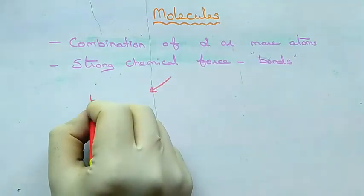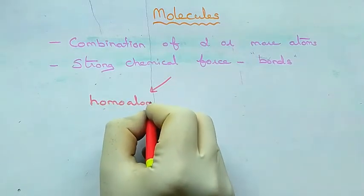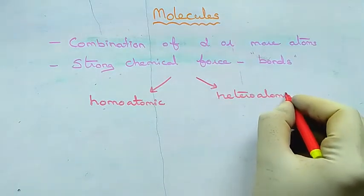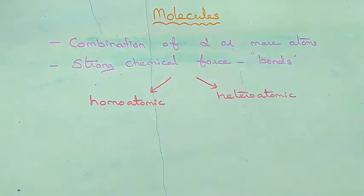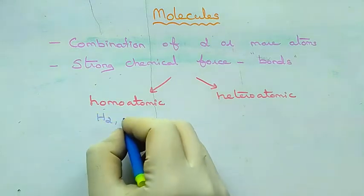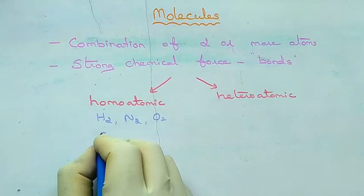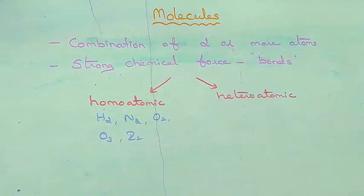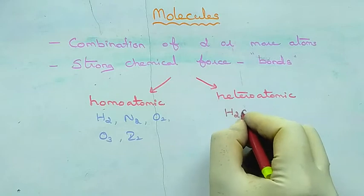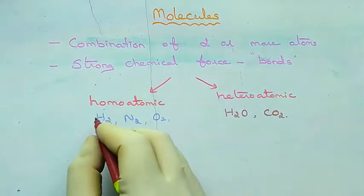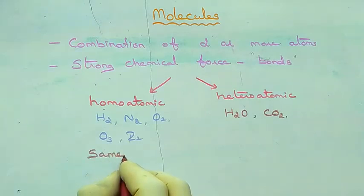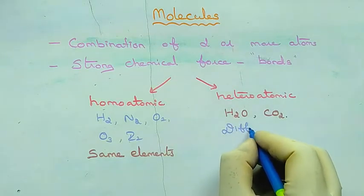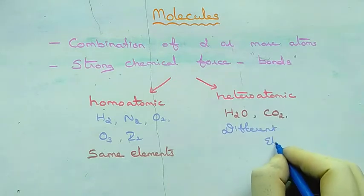Now we are going to see the two types of molecules. Molecules are classified into two types: homoatomic and heteroatomic. Examples of homoatomic molecules include hydrogen, nitrogen, oxygen, ozone, and iodine. Examples of heteroatomic molecules include water and carbon dioxide. In homoatomic molecules the same type of element is present, while in heteroatomic molecules different elements are present.